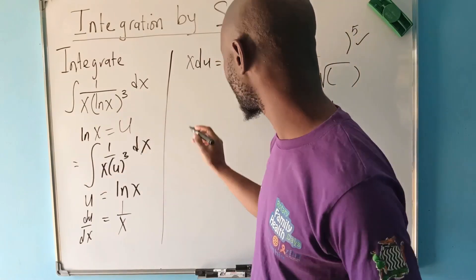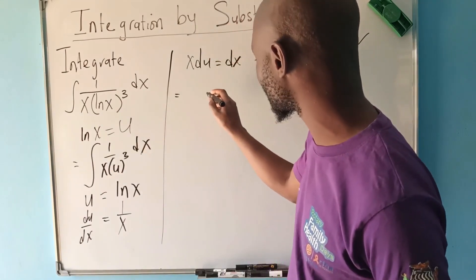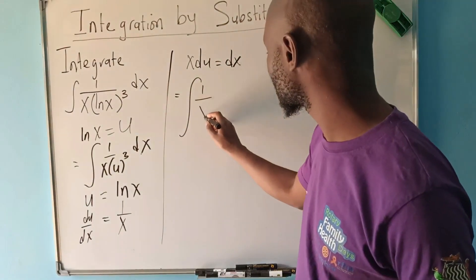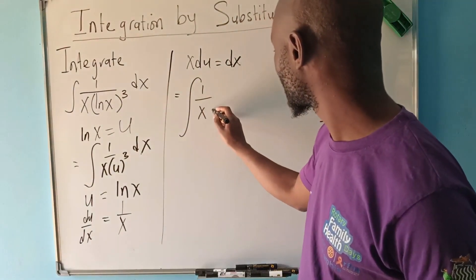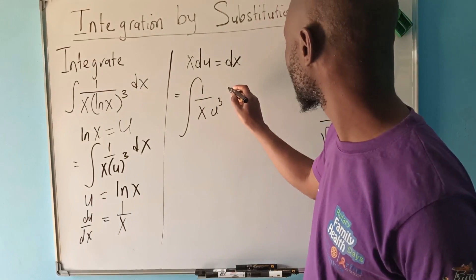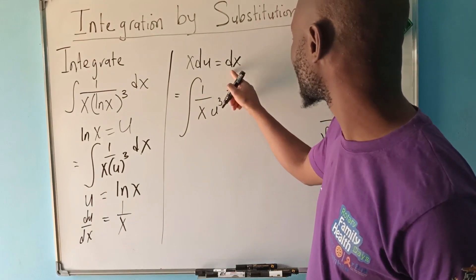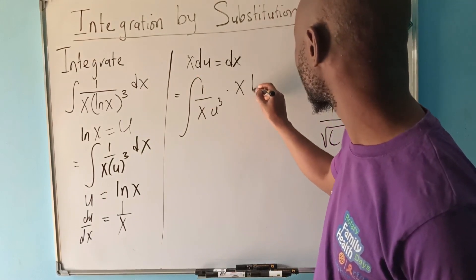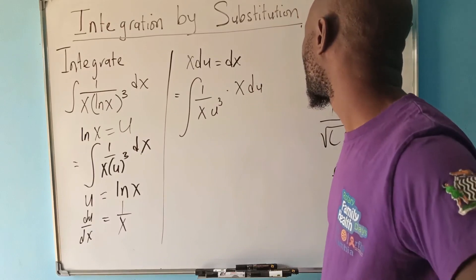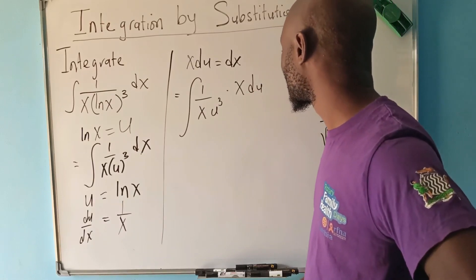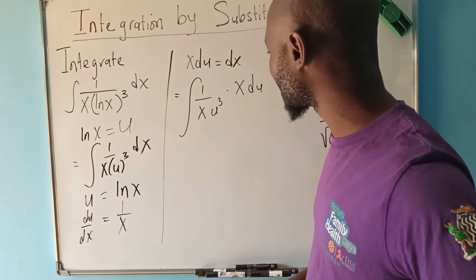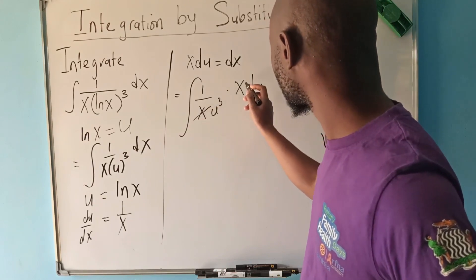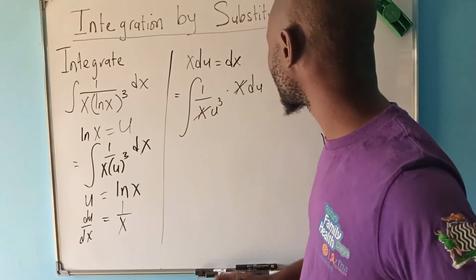Our integral now looks like this: the integral of one over x times u to the power three, multiplied by dx. But we know dx equals x du, so we substitute that in. At this point we can simplify the expression.